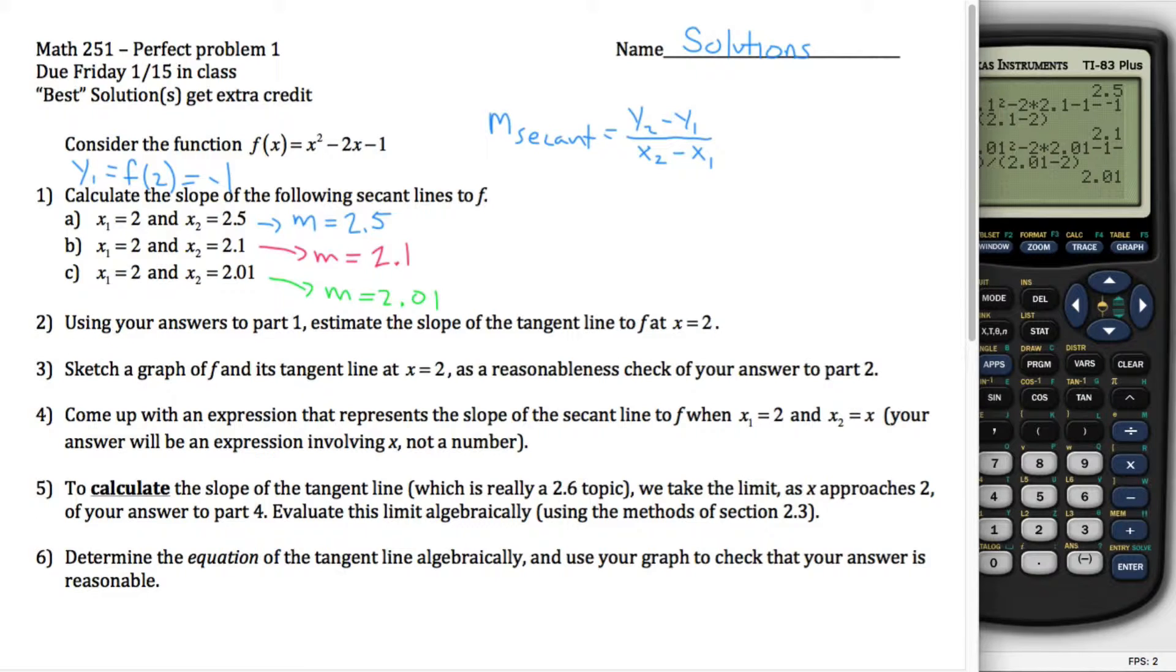these slopes are getting closer and closer to the slope of the tangent line. So in part two here, it asks me to estimate the slope of the tangent line, and I would estimate m to be equal to 2. And the reason I would guess 2 is these numbers appear to be approaching 2 as the second point that defines a secant line gets closer and closer to the first point.